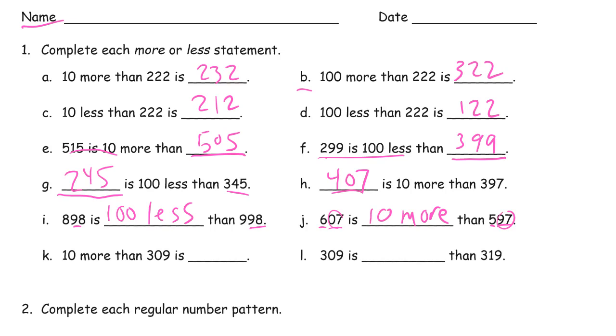10 more than 309 is 319. And 309 is... Well, it's less, right? And it's not 100 less. It's got to be 10 less.